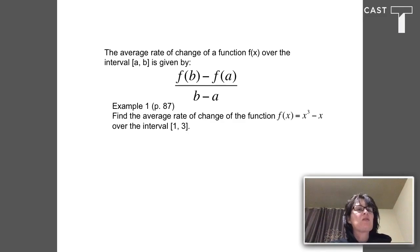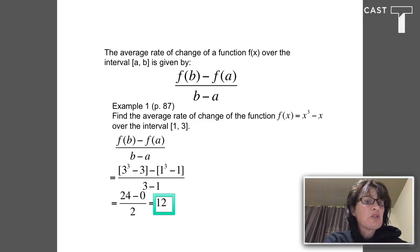There's an example here on page 87 in your book. If I want to find the average rate of change of the function x³ - x on the interval [1, 3], I can start with my average rate of change expression: f(b) - f(a) over b - a.